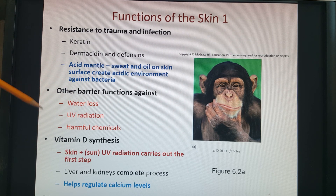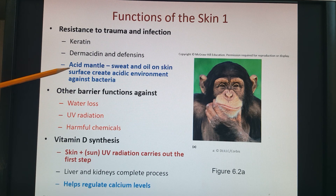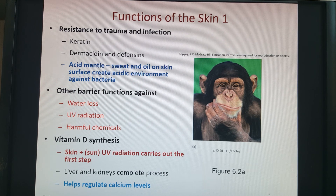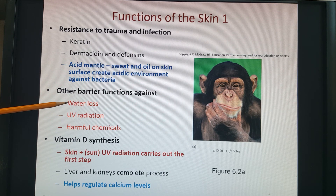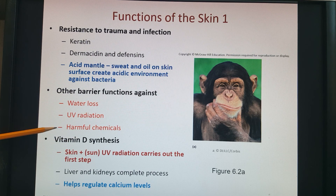Functions of our skin include protection and resistance to being cut. Part of that protection is the acid mantle — the sweat and oil on our skin creates an acidic environment to prevent bacteria from growing. This helps our bodies protect against pathogens. The skin also helps with water loss prevention and protects against UV radiation — we'll talk about which layers handle those.